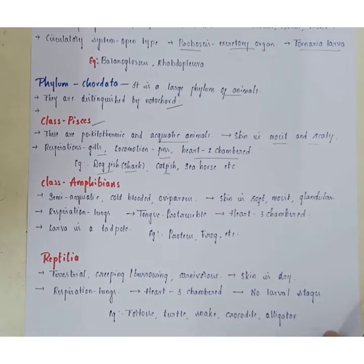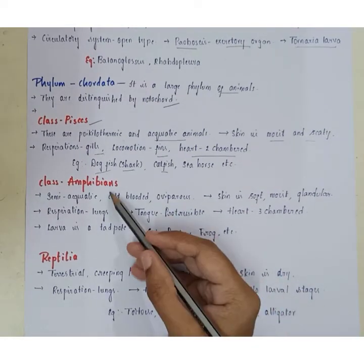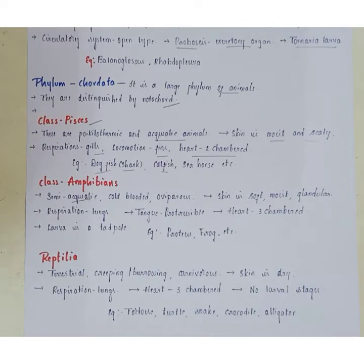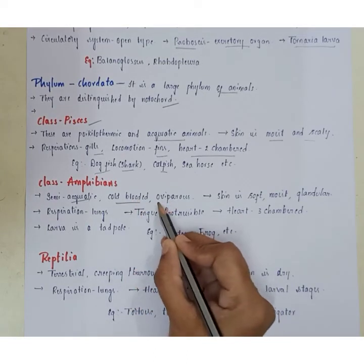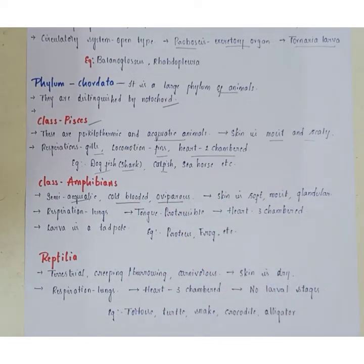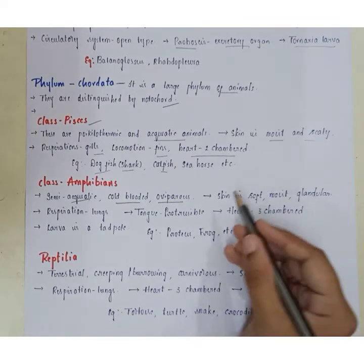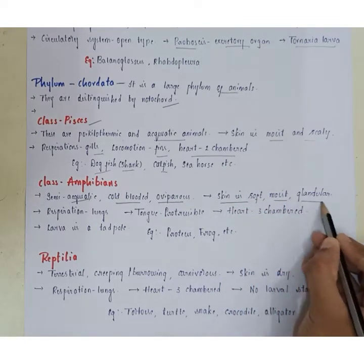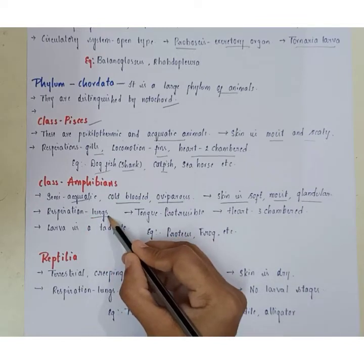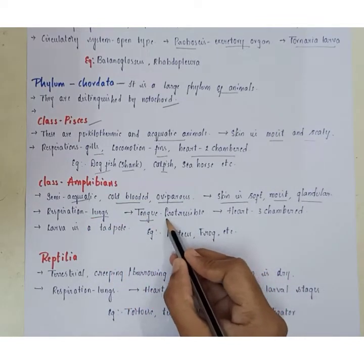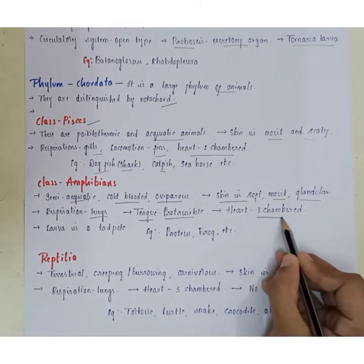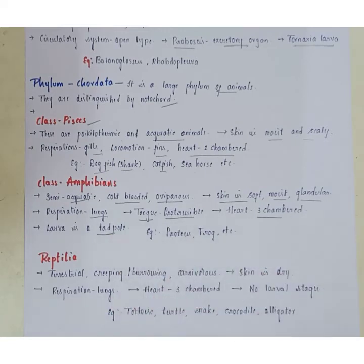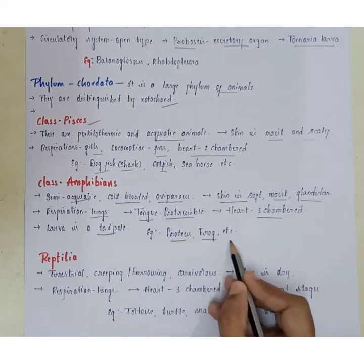Class Amphibia are semi-aquatic, spending half their life in water and half on land. They are cold-blooded and oviparous, giving rise to eggs. The skin is soft, moist, and glandular. Respiration occurs by lungs and the tongue is protrusible. The heart is three-chambered and the larval form is called a tadpole. Examples include Proteus and frog.